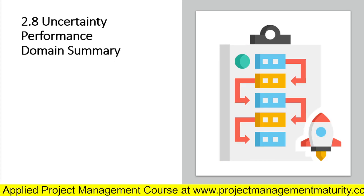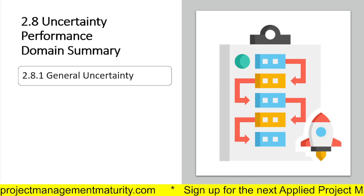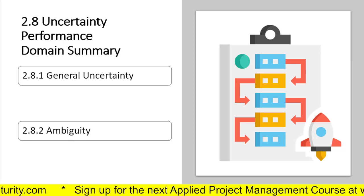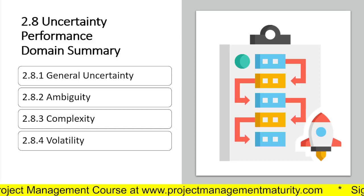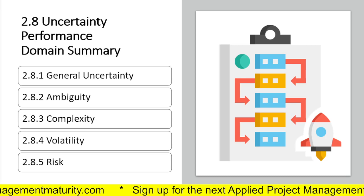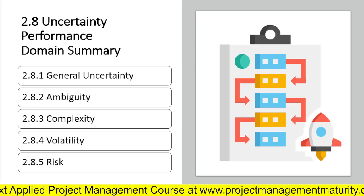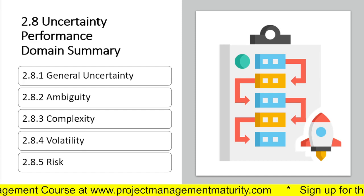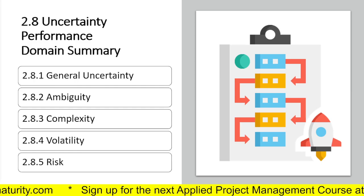The final domain, chapter eight, is the uncertainty performance domain. Uncertainty addresses general uncertainty, ambiguity, and complexity. Combine all of those with the topic of risk — uncertainty that can affect your project positively or negatively — and you have a solid understanding of this domain. To manage uncertainty, you can break things down into smaller pieces, use a more adaptive approach, and intentionally manage risks. Intentionally look for how to respond to the world of ambiguity, complexity, and volatility around you.